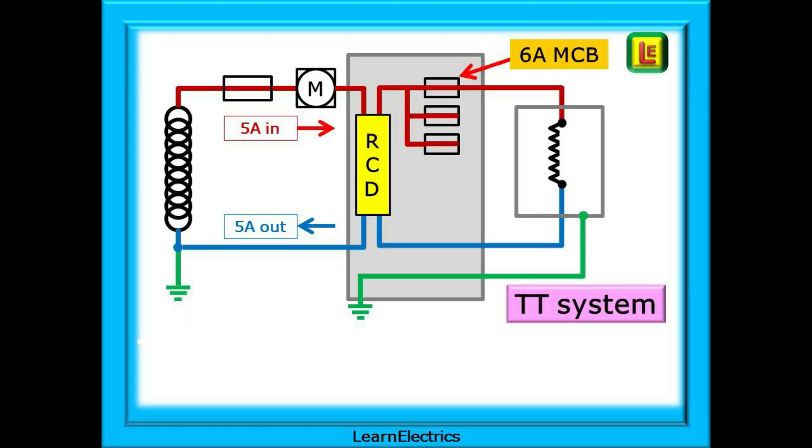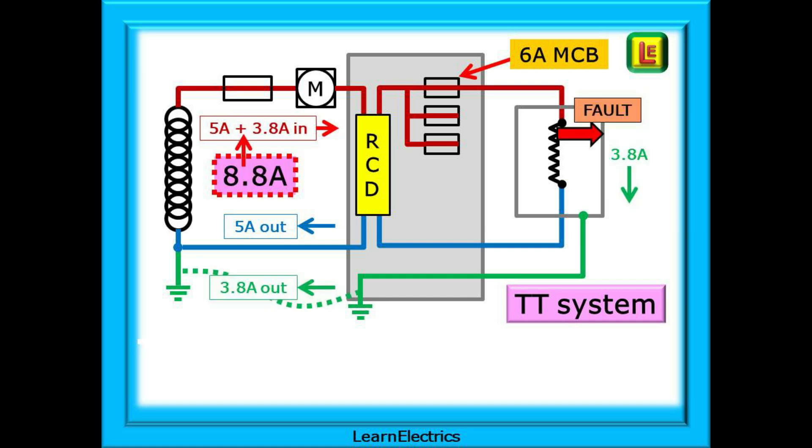The questions started with this drawing about TT systems. 5 amps working current flows through a 6 amp breaker and into the load and 5 amps flows out again. 5 amps is less than 6 amps so the breaker does not trip. So far so good.